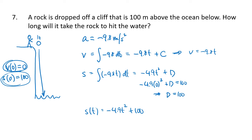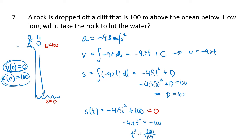To find when the rock hits the water, we set the position equal to 0, since the water level is at position 0. Setting negative 4.9t squared plus 100 equals 0 and solving: subtract 100 from both sides, divide by negative 4.9 to get t squared equals 100 over 4.9, then take the square root to find t is approximately 4.52 seconds.